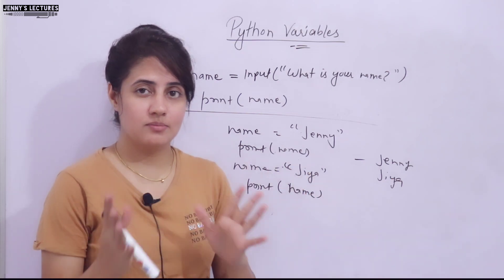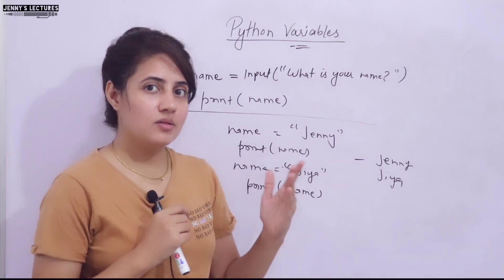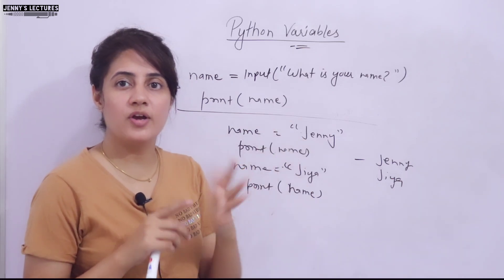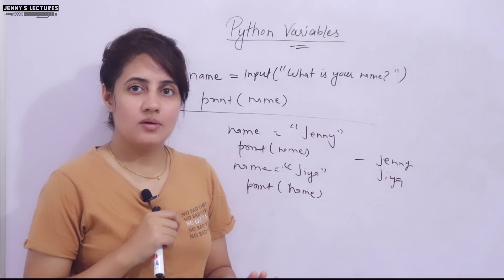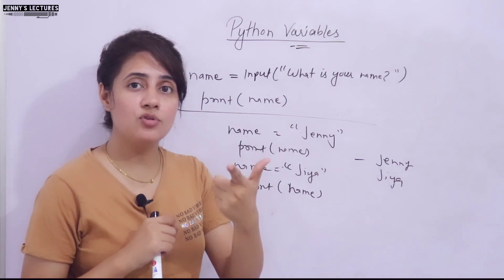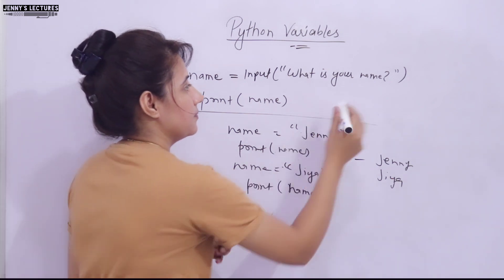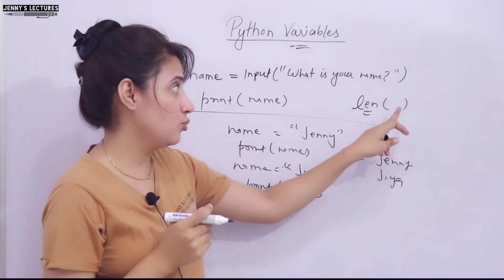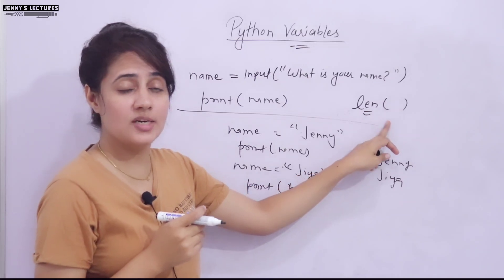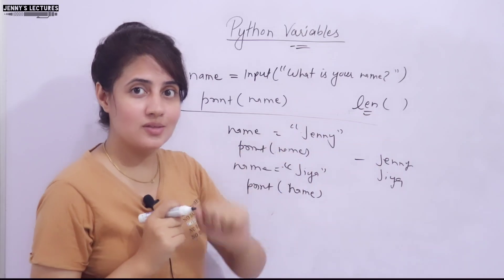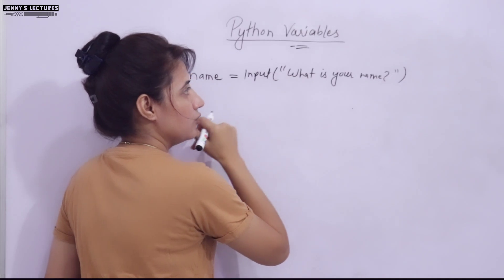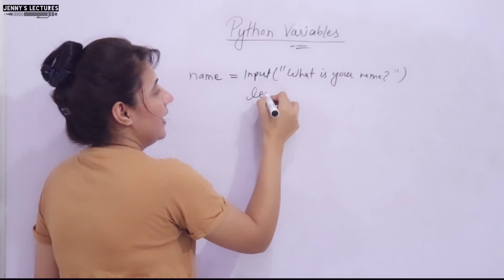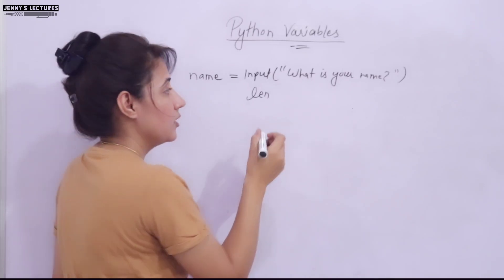Now here's a coding exercise: ask the user 'What is your name?', then print the length of that name. Suppose the user enters 'Jenny' — J-E-N-N-Y, five characters — so it should print 5. Pause the video and try this. Hint: to calculate the length of a string, use the built-in function len(). Pass the string or variable into len() and it returns the length.